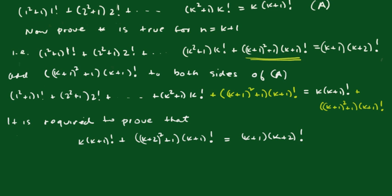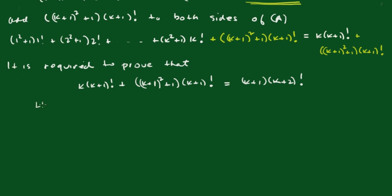There was a typo there — there should have been a one in there. You need to be really careful with this kind of work. Now we have it right. The left hand side equals k times (k+1) factorial, plus (k+1) all squared plus 1 times (k+1) factorial. Notice I didn't expand that out, so I can focus on the factorization. I'm going to take out the (k+1) factorial.